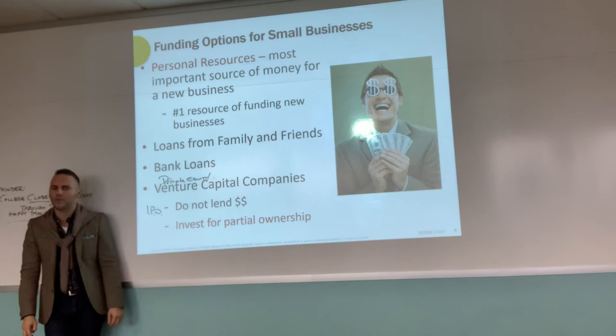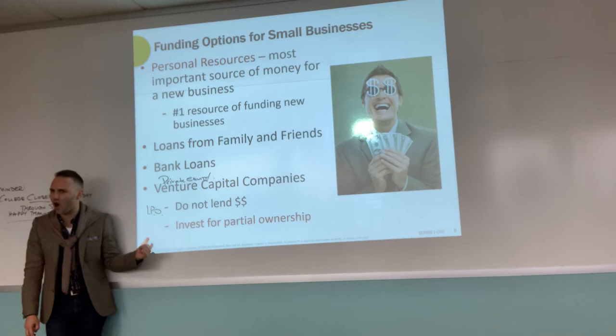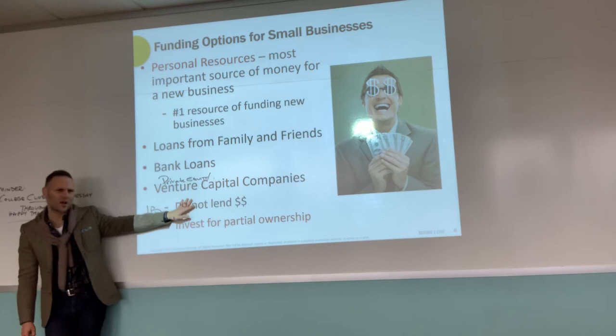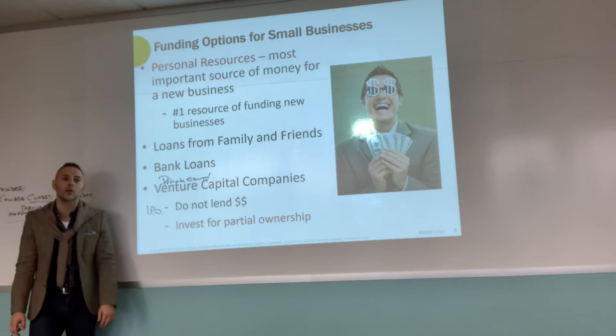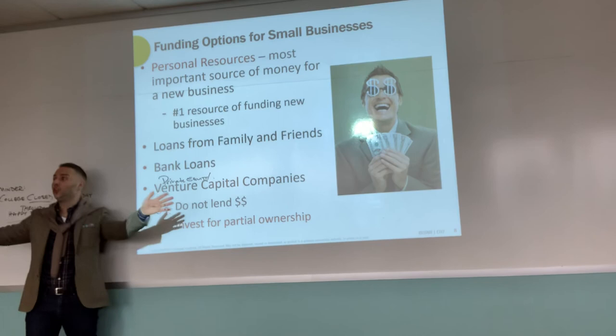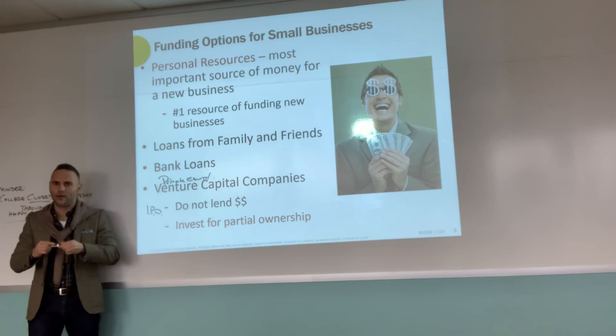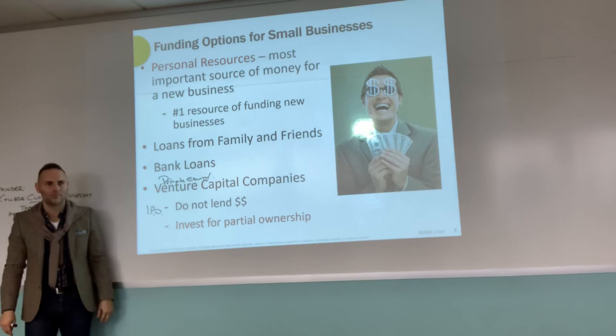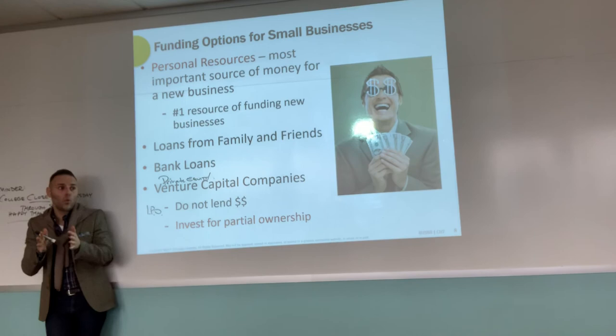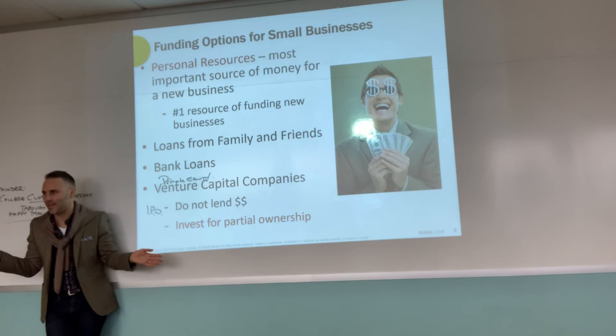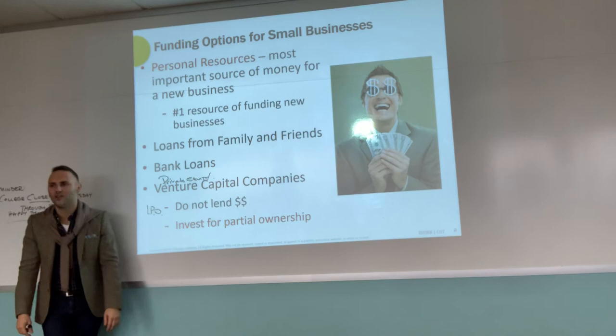An initial public offering is the first time a private business sells shares of stock on a public stock exchange. That's the story of Facebook, Instagram, Snapchat. The venture capital company then sells their shares to the public at that point — they exit, usually leaving with billions of dollars. That's the best case scenario. For every one of those stories, there are 90 stories of small business failure.